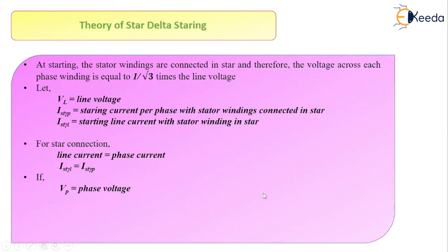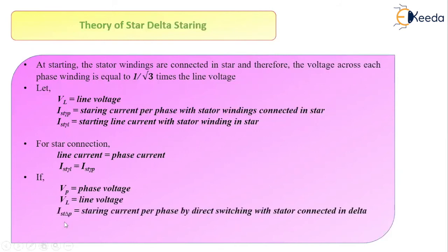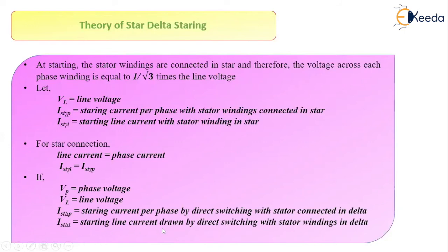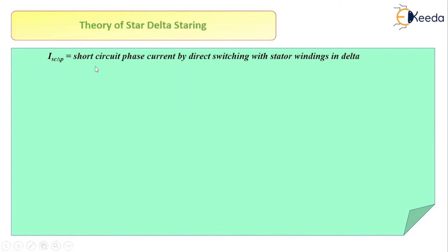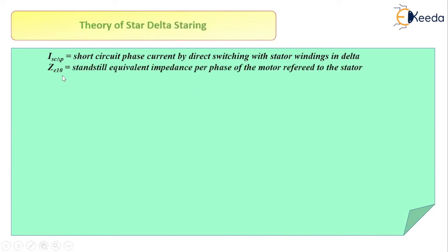Let V_P be the value of phase voltage and V_L be the value of line voltage. Let I_ST_delta_P be the starting current per phase if the motor was directly connected in delta — that is, the starting current per phase by direct switching with stator connected in delta. Similarly, I_ST_delta_L is the starting line current drawn by direct switching of motor winding in delta. Also let I_SC_delta_P be the short circuit phase current if the windings were directly connected in delta, and Z_E10 be the standstill equivalent impedance per phase of the motor referred to the stator winding.